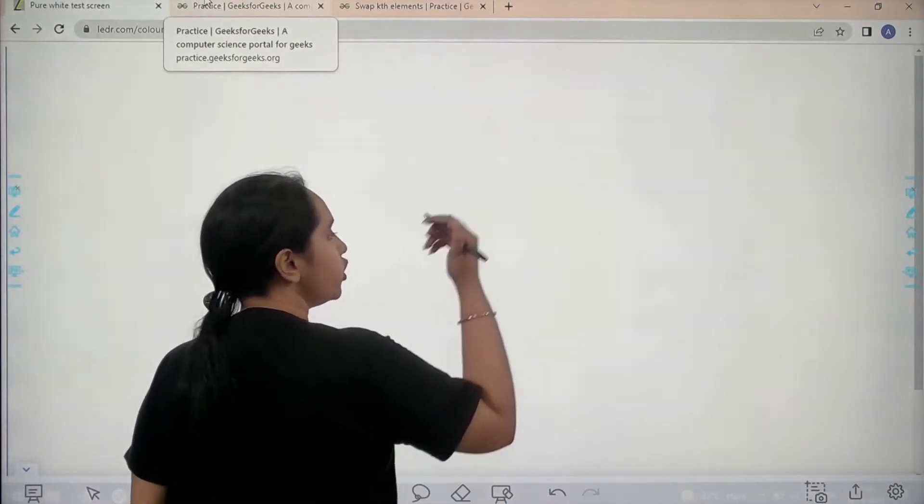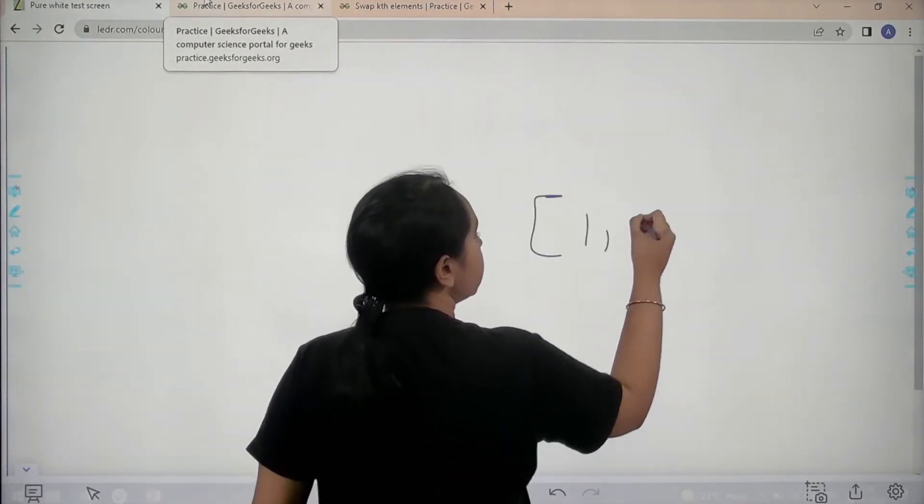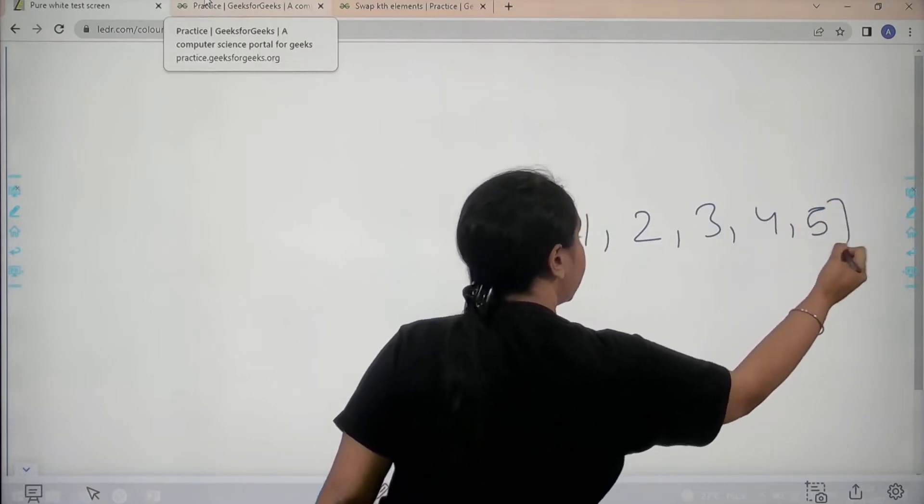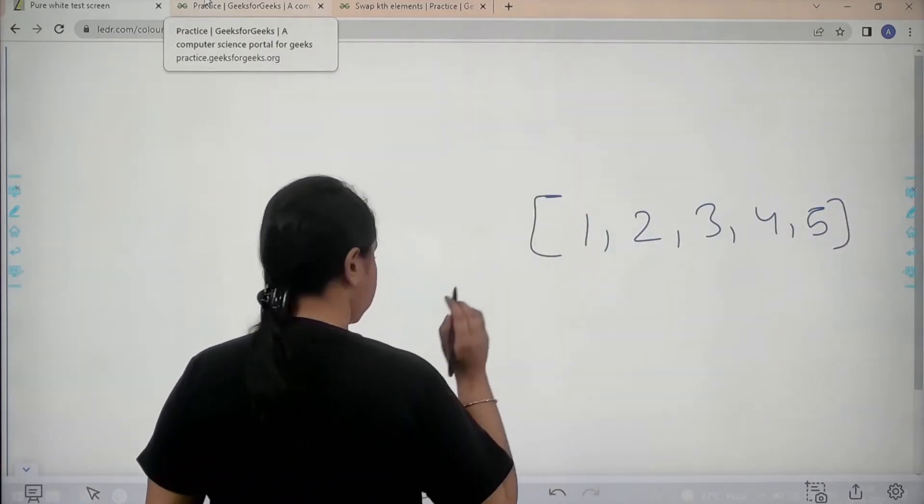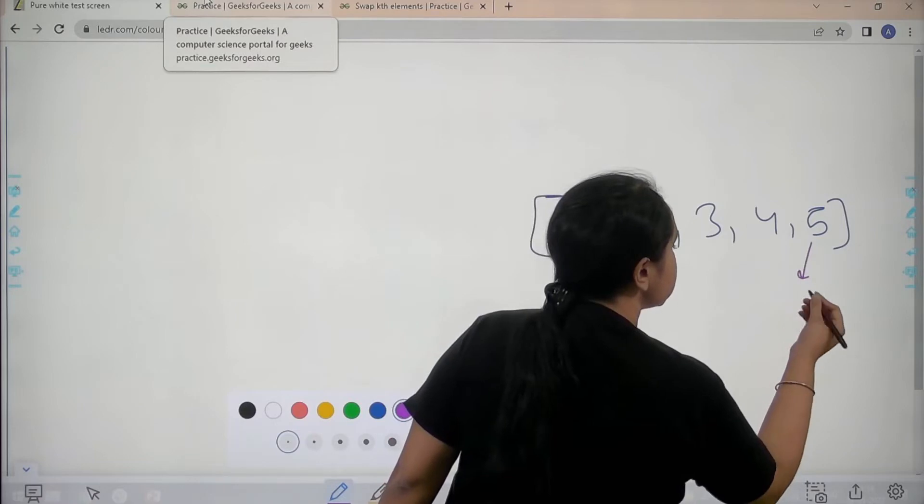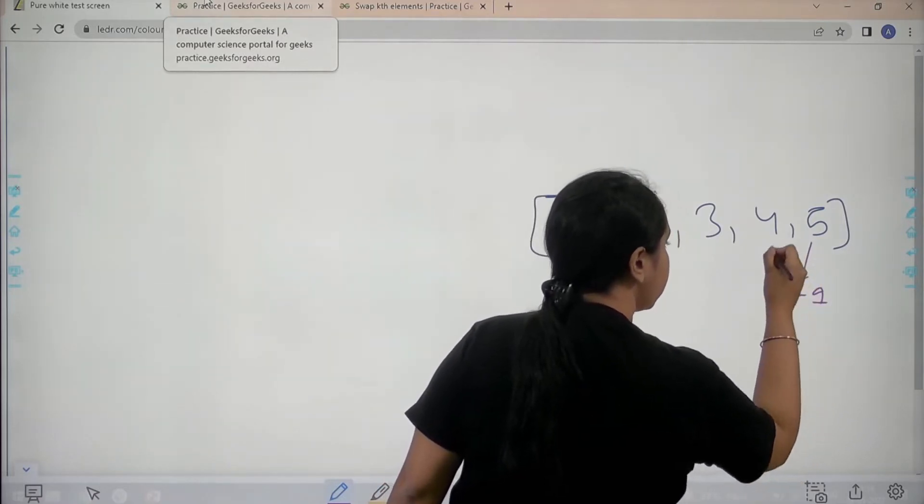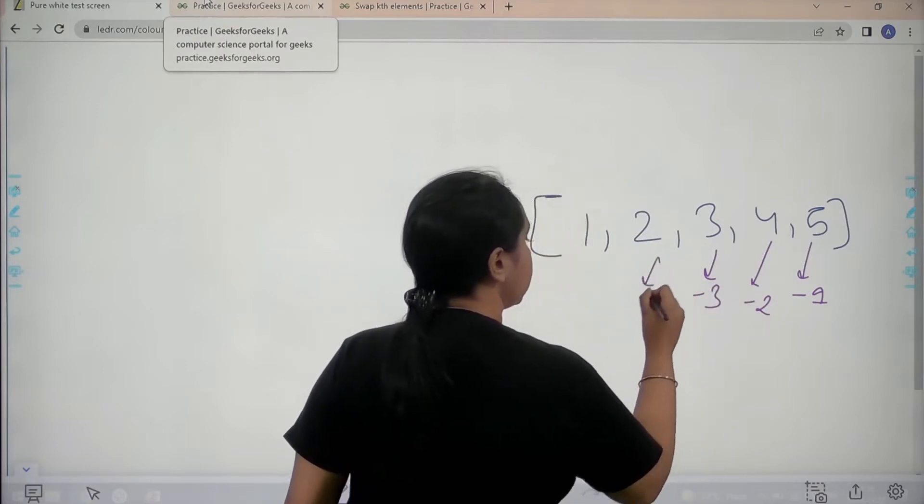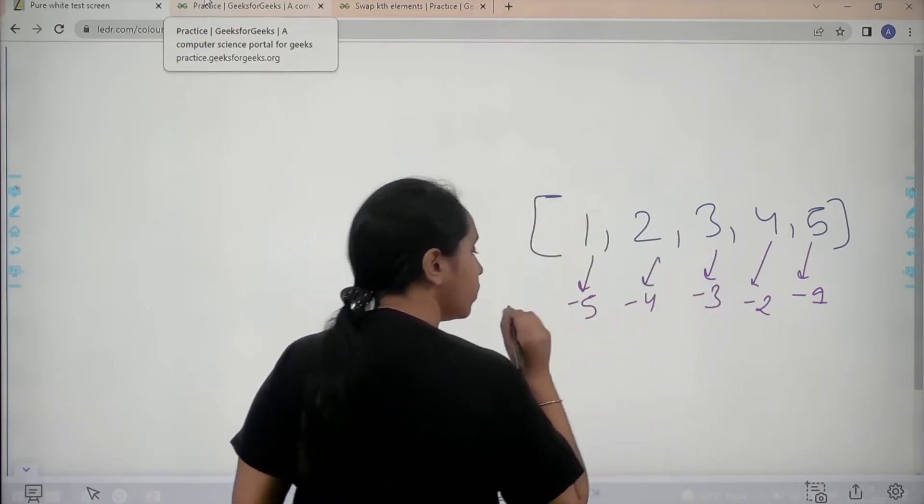So for doing this, first let me consider an array. This is the array. Now let's take their index positions. So this index position is minus 1, minus 2, minus 3, minus 4, minus 5.